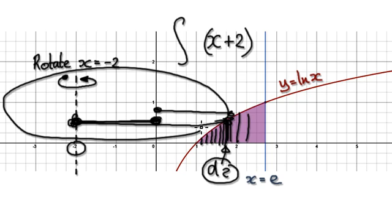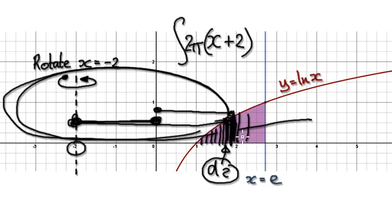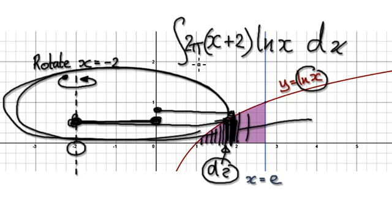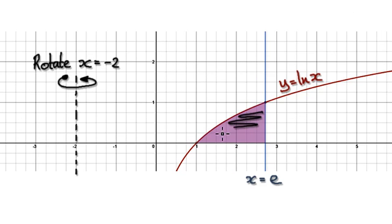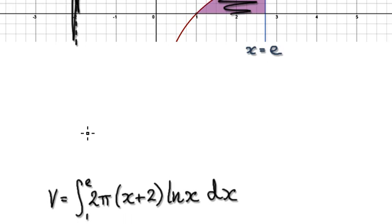Then we need to get the circumference, so we 2πr it. 2πr gives us the circumference of the cylinder. Then we need to multiply by the height. The height here is given by natural log of x. And we're integrating in the x direction from 1 to E. So this is our formula for the volume — if you rotate this purple area 360 degrees along this axis.